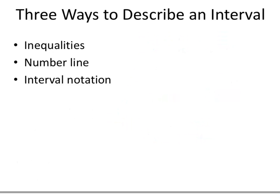What if we decided we wanted to actually include one of those endpoints in our interval? For example, what if we wanted the numbers between 4 and 9, but wanted to include 4 and still not include 9? We would write that inequality as 4 is less than or equal to x is less than 9. So 4 is part of this interval, but 9 is not because of that less than sign.